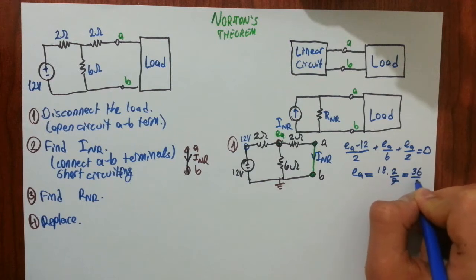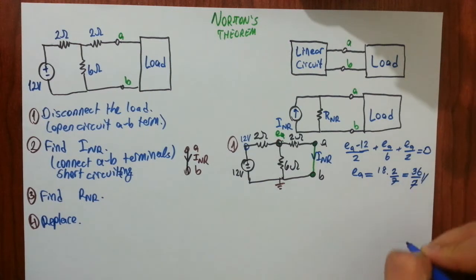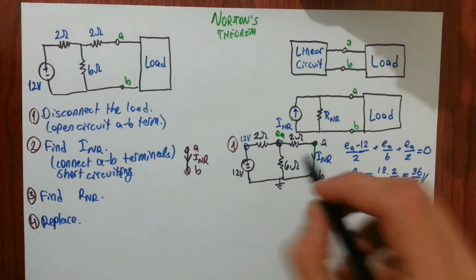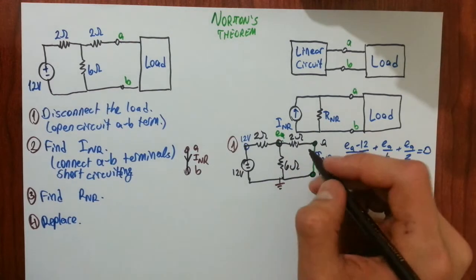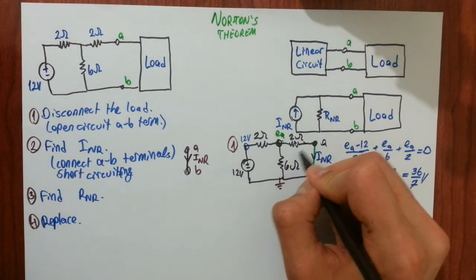From this equation you can find Ea as 18 times 2 over 7 volts. Meaning 36 over 7 volts. So Ea is 36 over 7 volts.